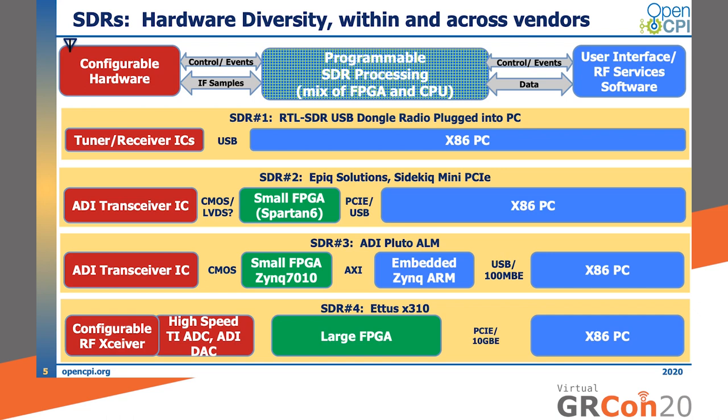As you can see, there are many different ways radios are built with different types of processing happening in different places. The challenge is how and where to put your SDR processing — or in GNU Radio terms, the blocks in your flow graph. There are many ways it can happen on different processors of different types with different interfaces for data flowing between blocks on different processor types. This is hardware diversity in SDRs.